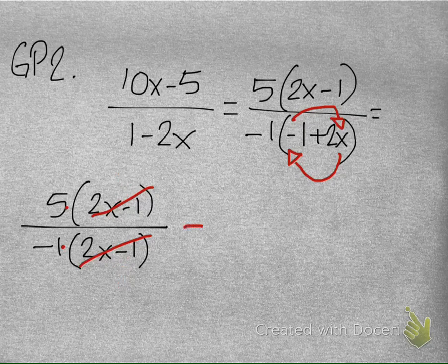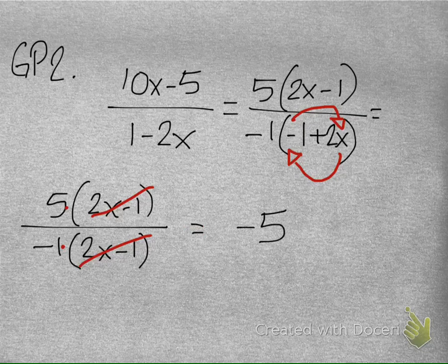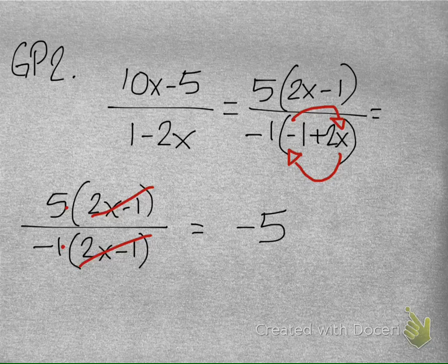So if that's part of the lump sum, you can go ahead and cancel that out. When you simplify this, you actually, on this particular problem, you actually lose your variable. The simplification here is actually just negative 5. There's no more variable involved. If you need to continue copying that down, go for it, otherwise the video will play on to GP3.